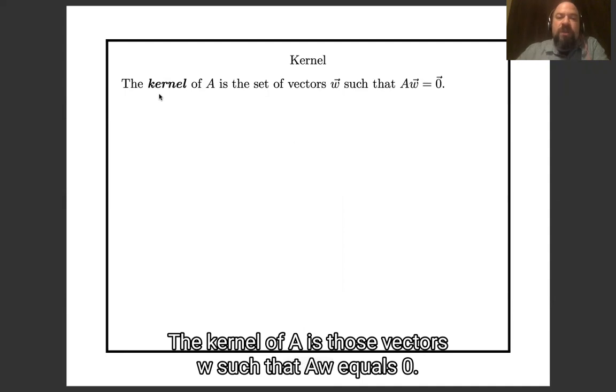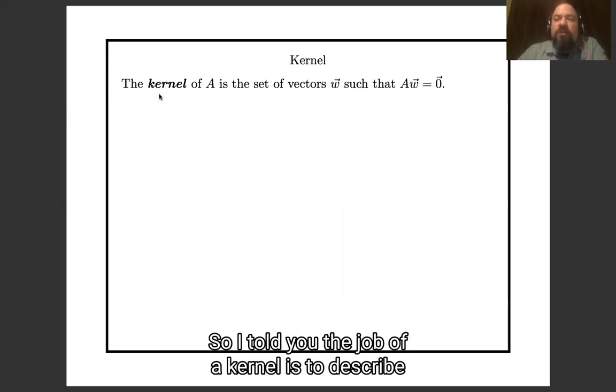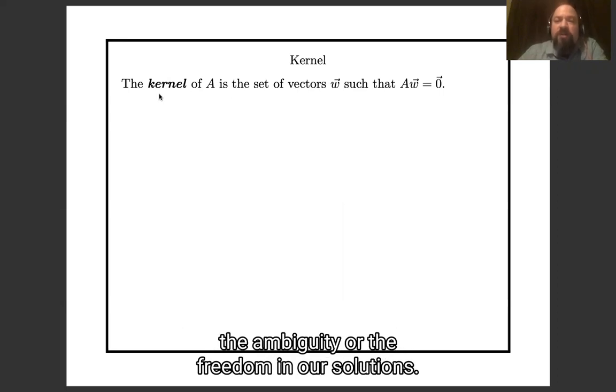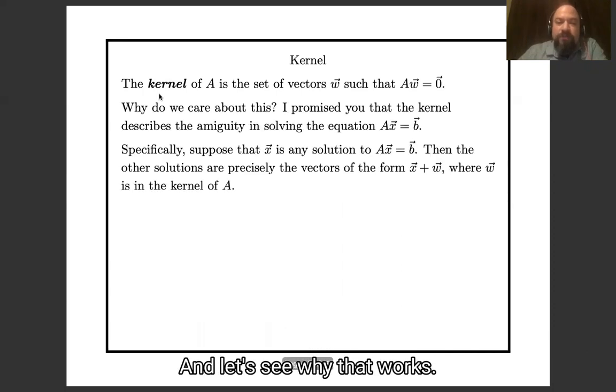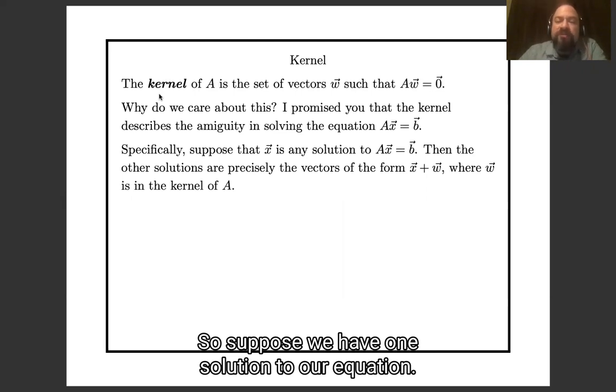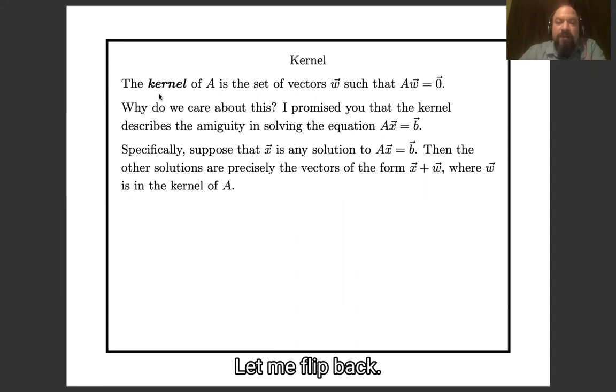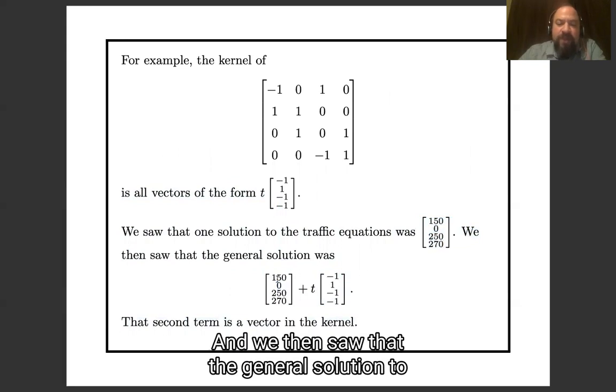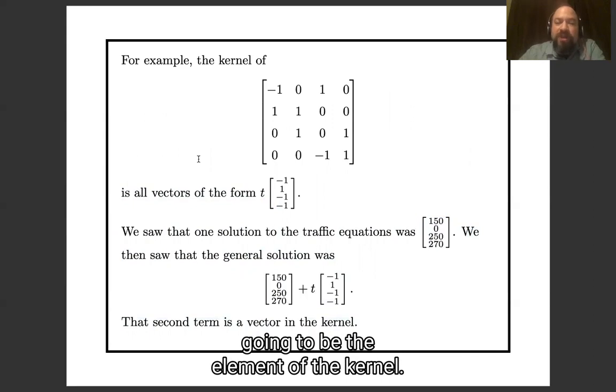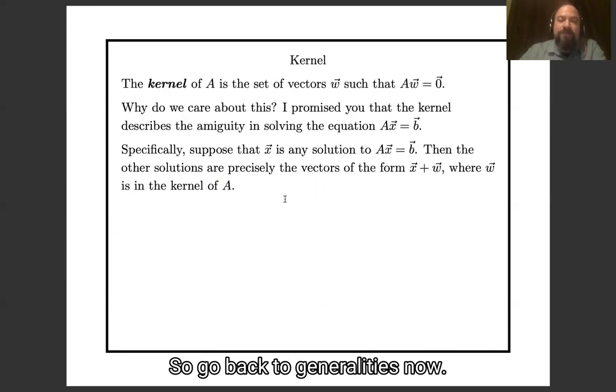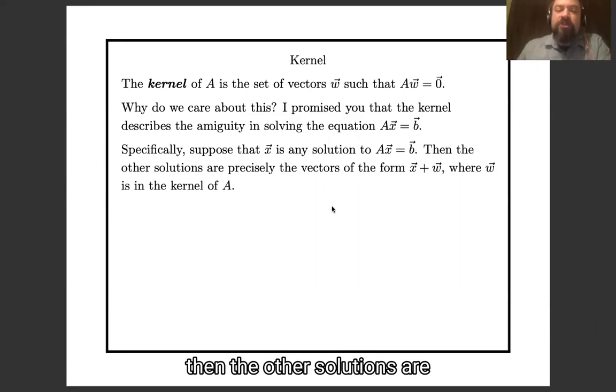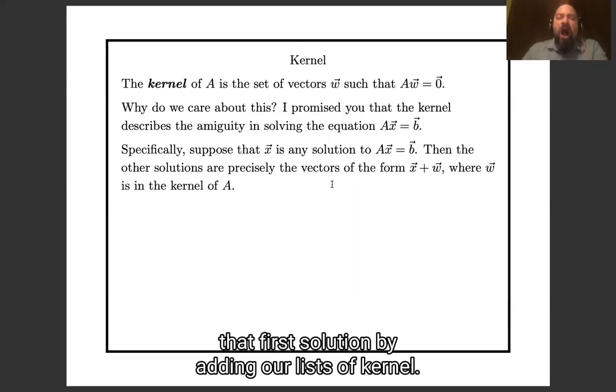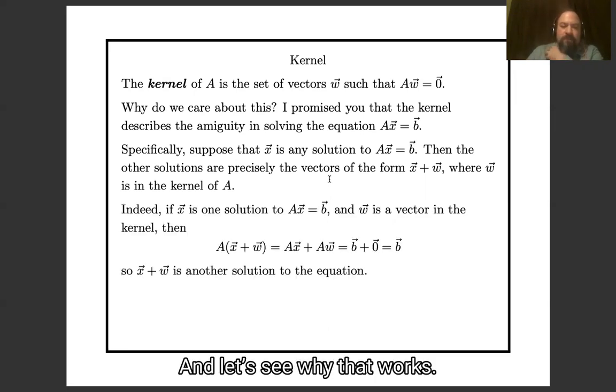Moving on to kernel. The kernel of A is those vectors w such that a w equals zero. So I told you the job of the kernel is to describe the ambiguity or the freedom in our solutions. And let's see why that works. So suppose we have one solution to our equation when we flip back, when we flip ahead one slide. One solution to the traffic equations was this vector over here. And we then saw that the general solution to the traffic equations was that same vector plus an additional term. That additional term is going to be the element of the kernel. So I'll go back to generalities now. Now, if x is one solution to the equation, then the other solutions are exactly those vectors that we get from that first solution by adding elements of the kernel.